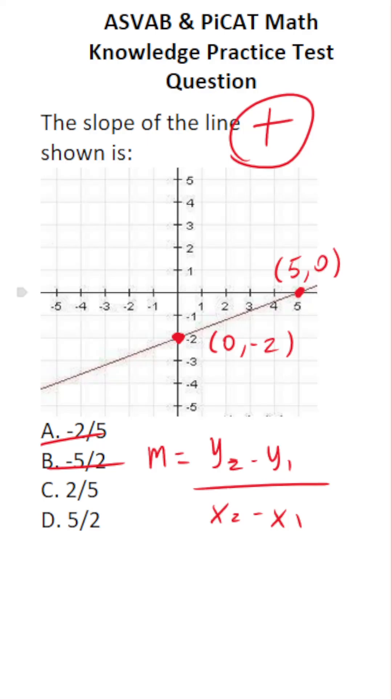Again, ordered pairs come in x, y. So I can say that this point is x1, y1. That makes this point x2, y2.